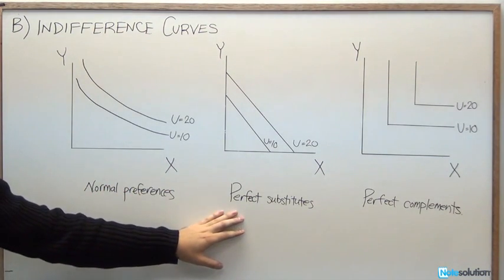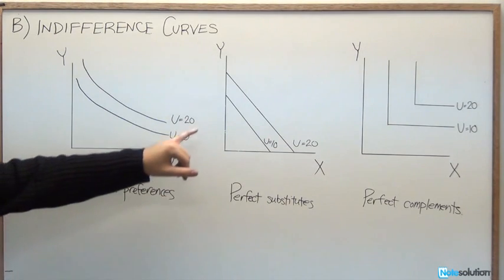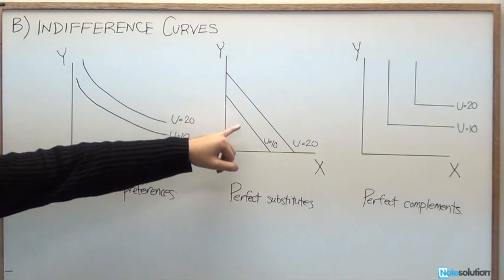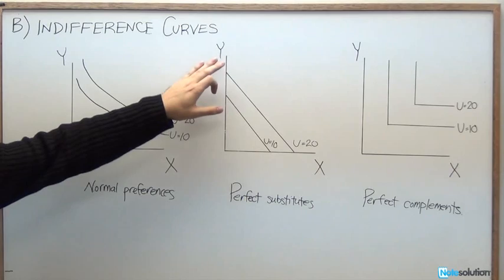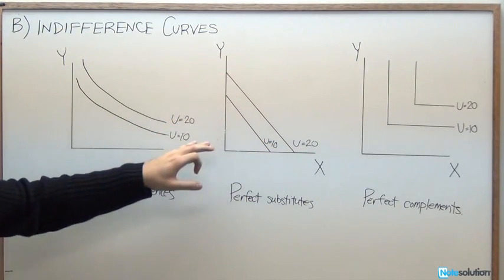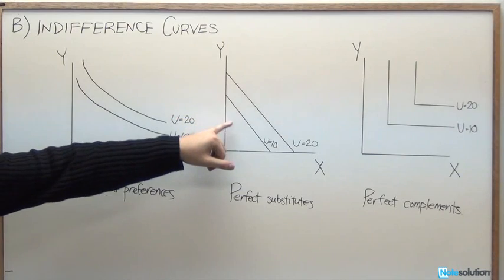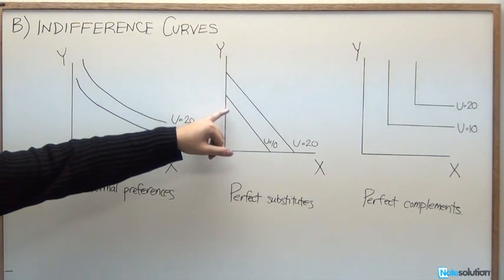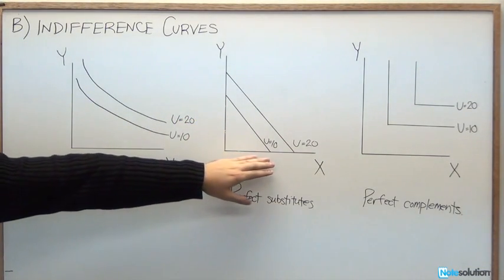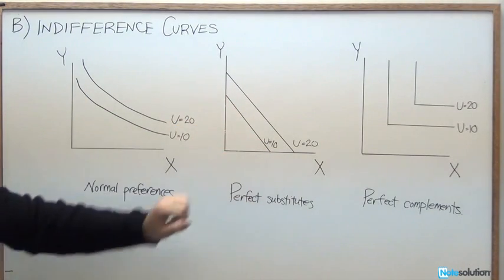What about the perfect substitutes case? Here, notice that they're always negatively sloped, but they don't have that bowed outward shape. Technically, they're still convex. This is one extreme form where we have exactly one straight line.